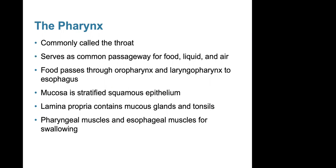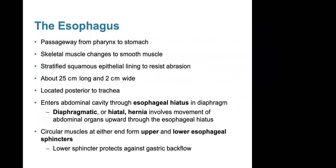The pharynx, commonly called the throat, serves as a common passageway for food, liquid, and air. Food passes through the oral pharynx and laryngopharynx to the esophagus. The mucosa is stratified squamous epithelium, the lamina propria contains mucous glands and tonsils, and there are pharyngeal and esophageal muscles for swallowing. The esophagus is a passageway from the pharynx to the stomach, with skeletal muscle that transitions to smooth muscle about halfway down, and is lined with stratified squamous epithelium to resist abrasion. It is about 25 centimeters long and 2 centimeters wide.